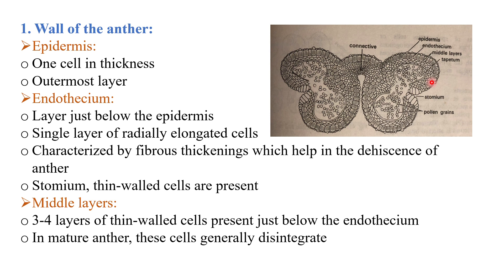Stomium, or thin-walled cells, are also present in the endothecium layer — this is a special characteristic of the anther. The next three to four layers below the endothecium are known as the middle layer. In a mature anther, these degenerate and disintegrate.